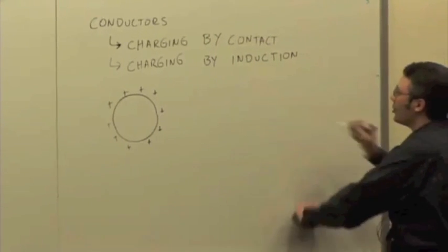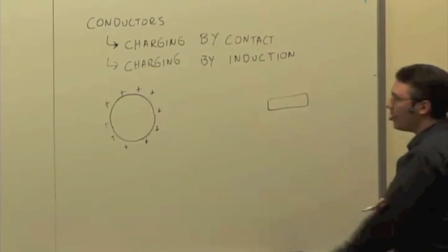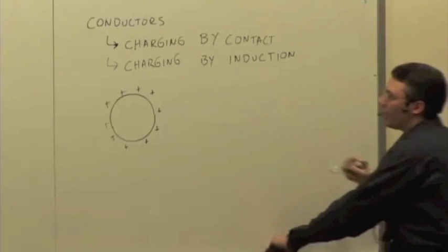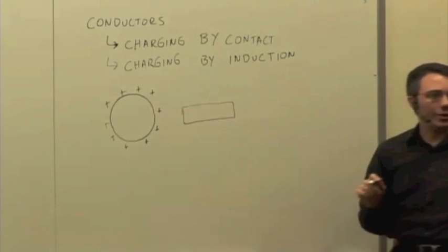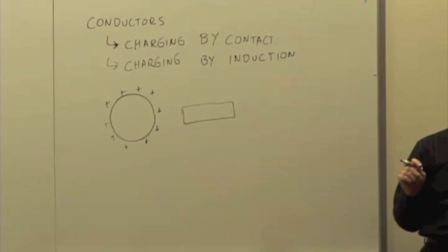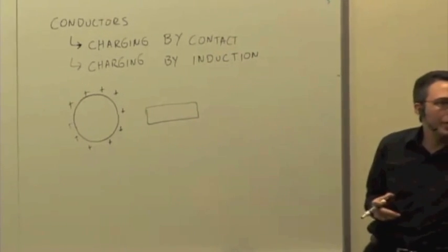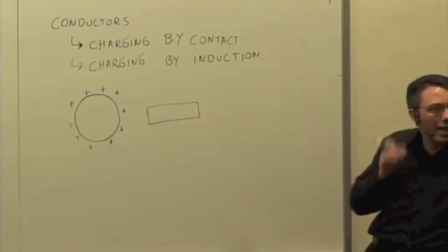Let's make it kind of longish. And you bring the neutral conductor near this positive charge, and what happens to it? It's a metal conductor, so if you bring it near a positive charge, what's going to happen?